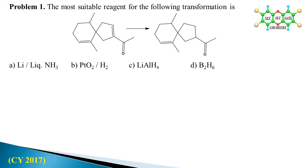Problem number one: the most suitable reagent for the following transformation. See the transformation. The options are: (A) lithium in liquid ammonia, (B) hydrogenation over platinum oxide, (C) lithium aluminum hydride, and (D) diborane.